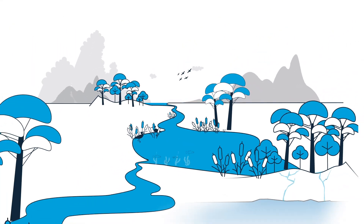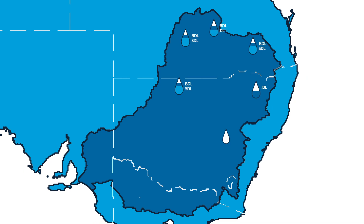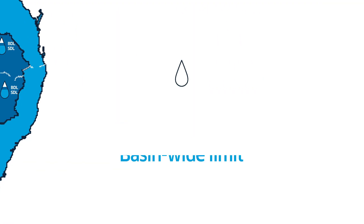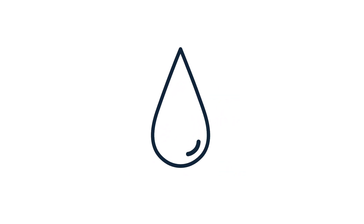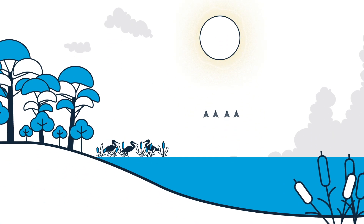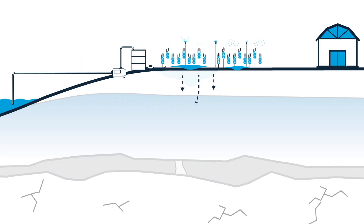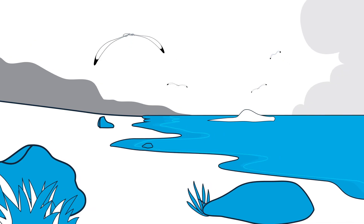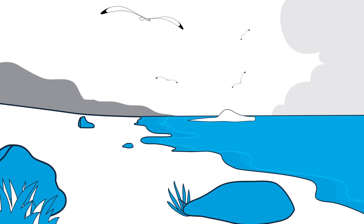Each area of the basin has its own BDL and SDL. Together these form a basin-wide limit. There is also water that is accounted for as lost. This includes water that is lost through evaporation, some water that recharges into groundwater, water that remains in the river and water that flushes sediment and salt out to sea.